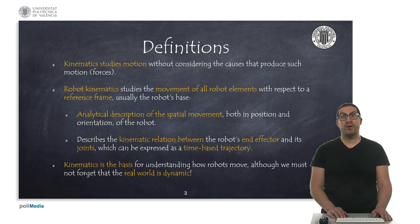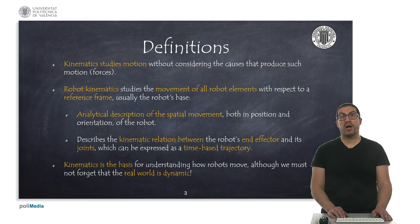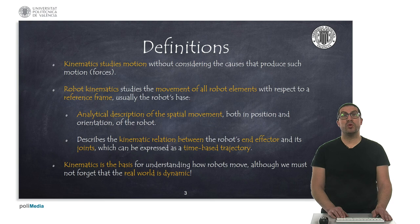Kinematics allows, therefore, to establish a relationship between the end effector and the joints of the robot as a function over time, both in position and speed. Kinematics is the basis for understanding how robots move. In a large number of applications where robots do not move at high speeds, kinematics plays a fundamental role.